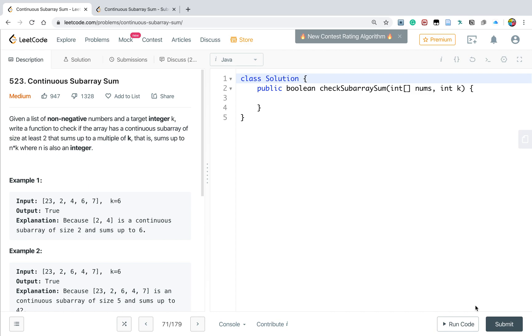Hello friends, today let's solve Continuous Subarray Sum. We are given a list of non-negative numbers and a target integer k. We need to write a function to check if the array has a continuous subarray of size at least two that sums up to a multiple of k.